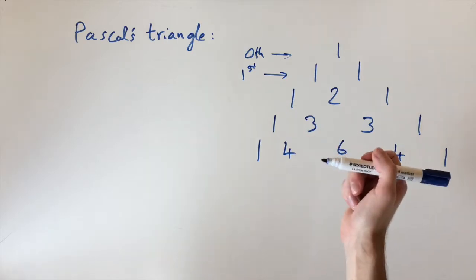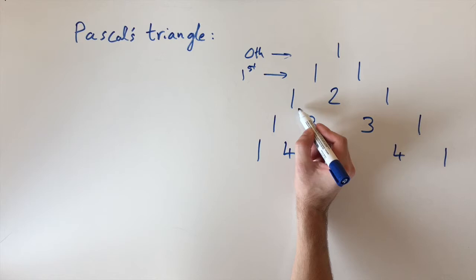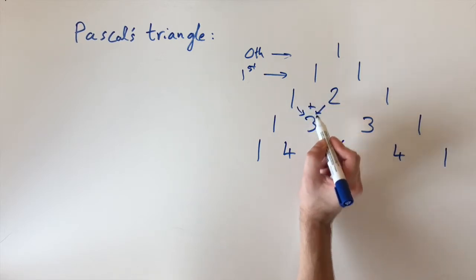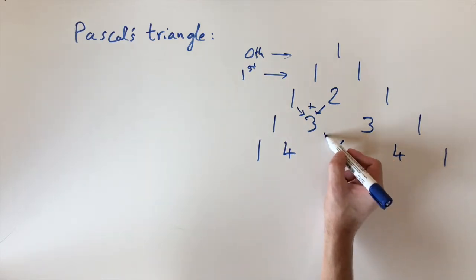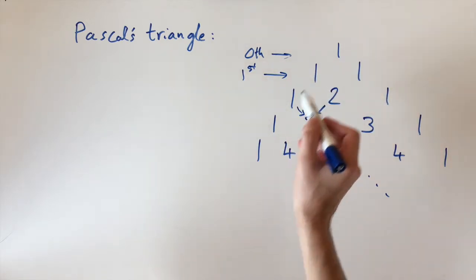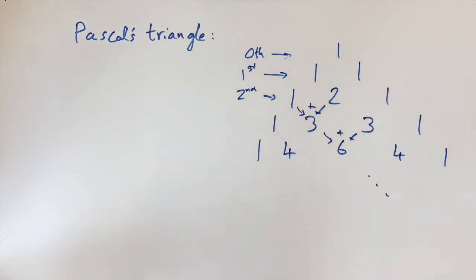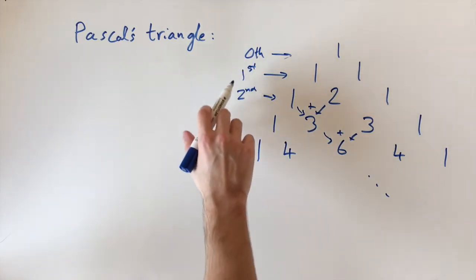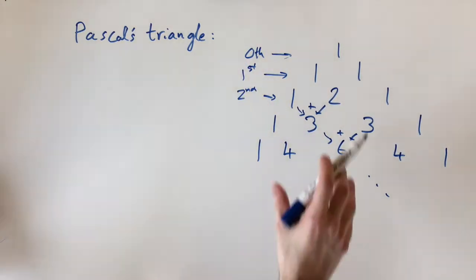To get the next rows, the pattern is you take the two numbers above it and then you add them. So from here and here you add 1 plus 2 and you get 3. And then similarly, if you want to go from 3 and 3, you add these two numbers and you get 6. This carries on to infinity. The only numbers we can't add together are the ones on the edge, but these are always just 1. Carrying on this pattern, this is the second row, third, fourth, etc. And we'll see why we have this naming convention in a second.